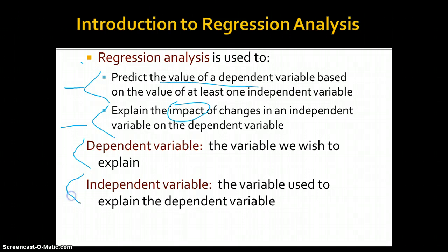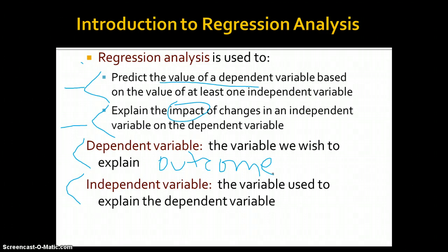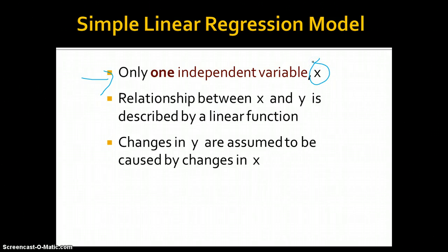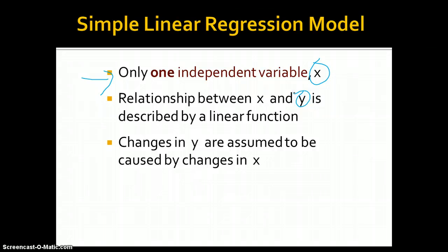Just for review: the dependent variable is the variable we wish to explain — we also call it the outcome variable. The independent variable is the variable used to explain the dependent variable; the change in the dependent variable depends on change in the independent variable. In simple linear regression, we use only one independent variable, x, and the relationship between x and y — y being our dependent variable — is described by a linear function where changes in y are assumed to be caused by changes in x.